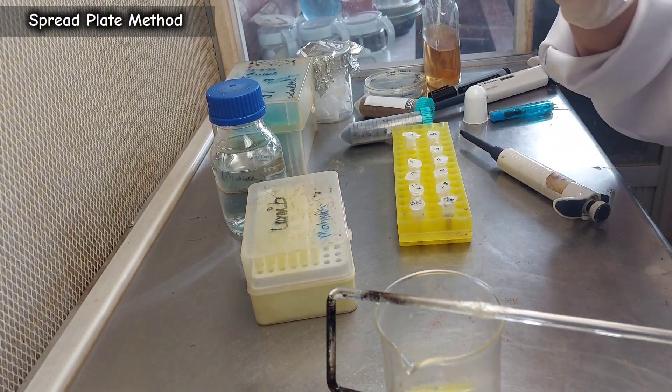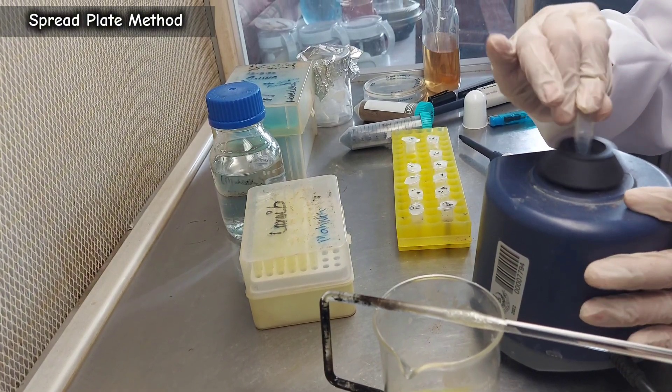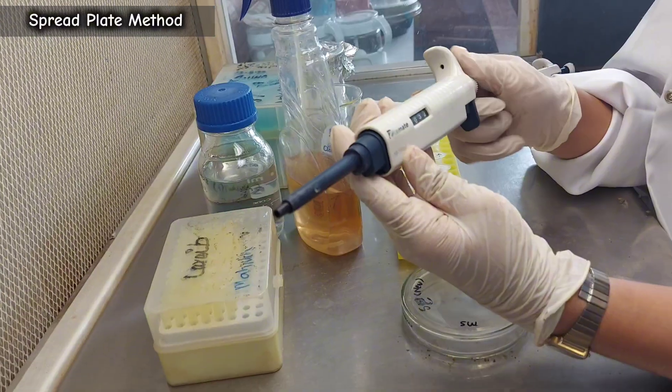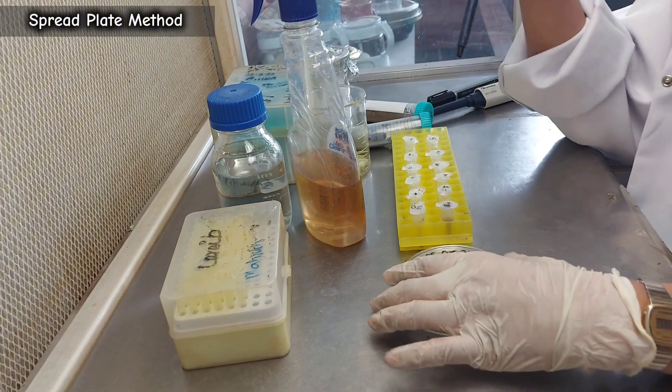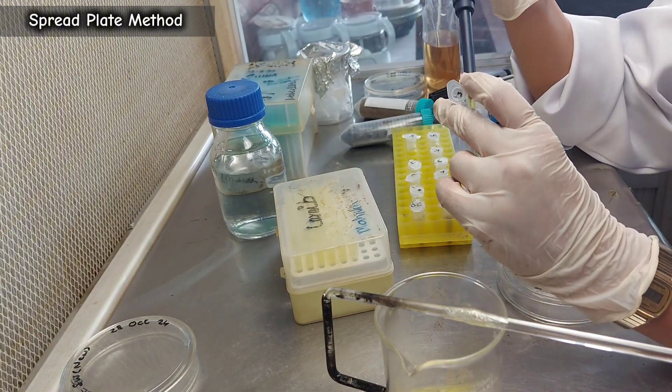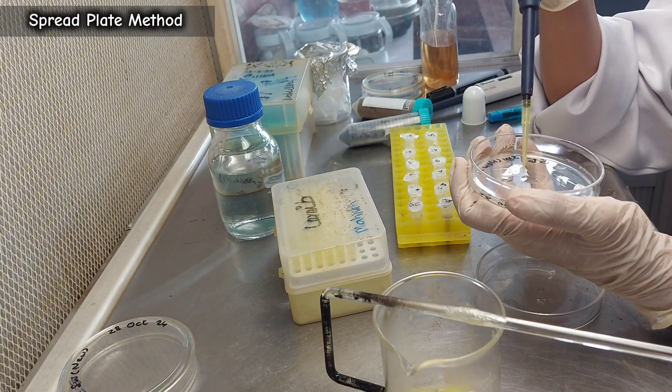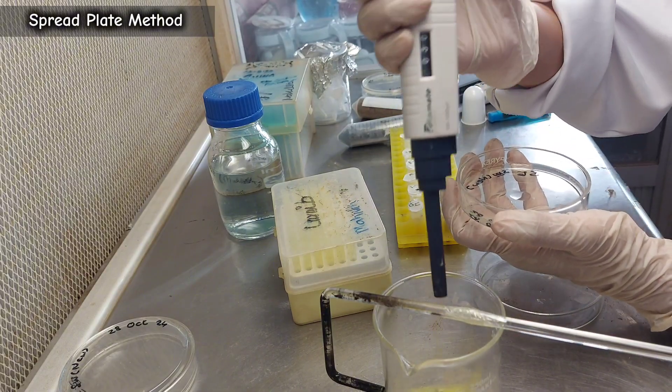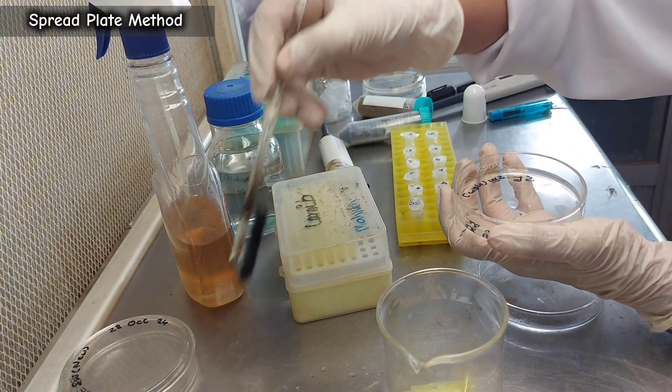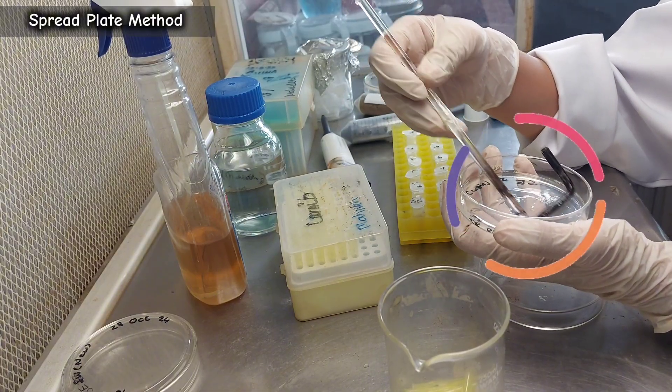Vortex the dilution tube before micropipetting. Using a micropipette, transfer 20 microliters of the dilution onto the center of a nutrient agar plate. Use the sterilized glass spreader to evenly spread the dilution across the agar surface.